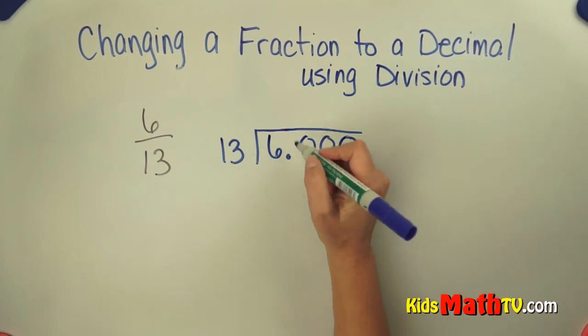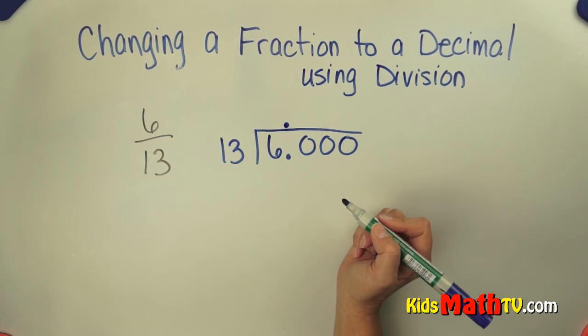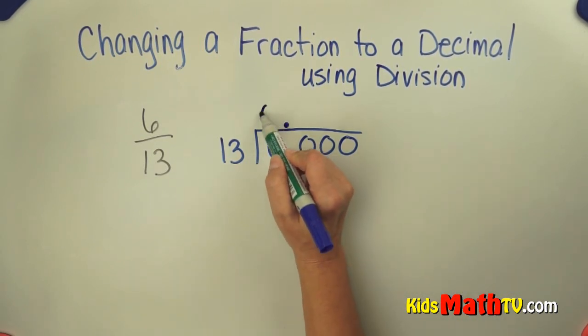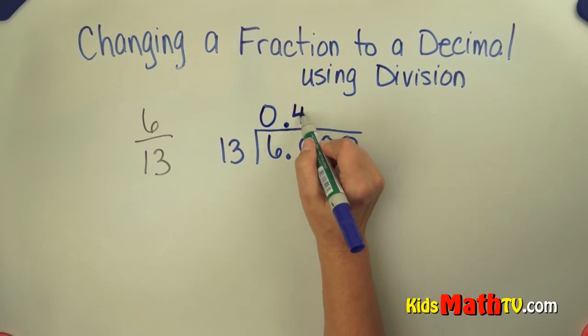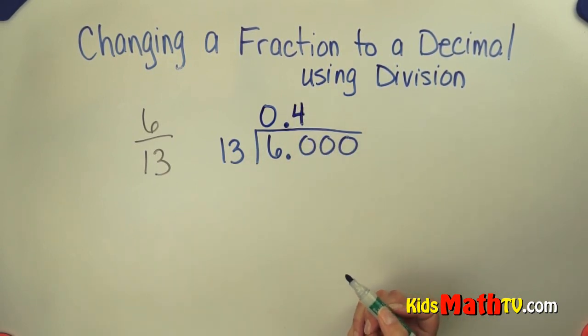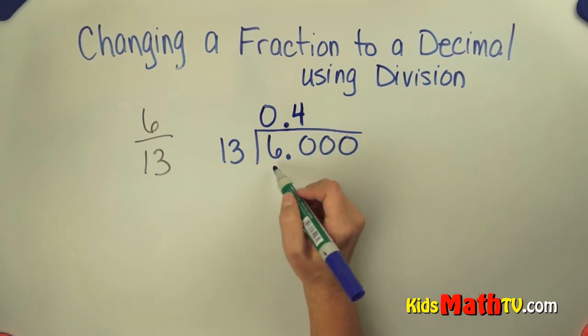I have no decimals in my divisor so I simply bring my decimal straight up. There are no 13s in 6, so that's a zero. There are four 13s in 60. Four times 13 is 52.